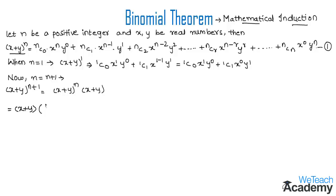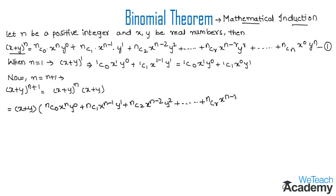Expanding (x + y)^n gives: nC0 · x^n · y^0 + nC1 · x^(n-1) · y^1 + nC2 · x^(n-2) · y^2 + ... + nCr · x^(n-r) · y^r + ... + nCn · x^0 · y^n. Now let us multiply each individual term, x and y, with this whole group.